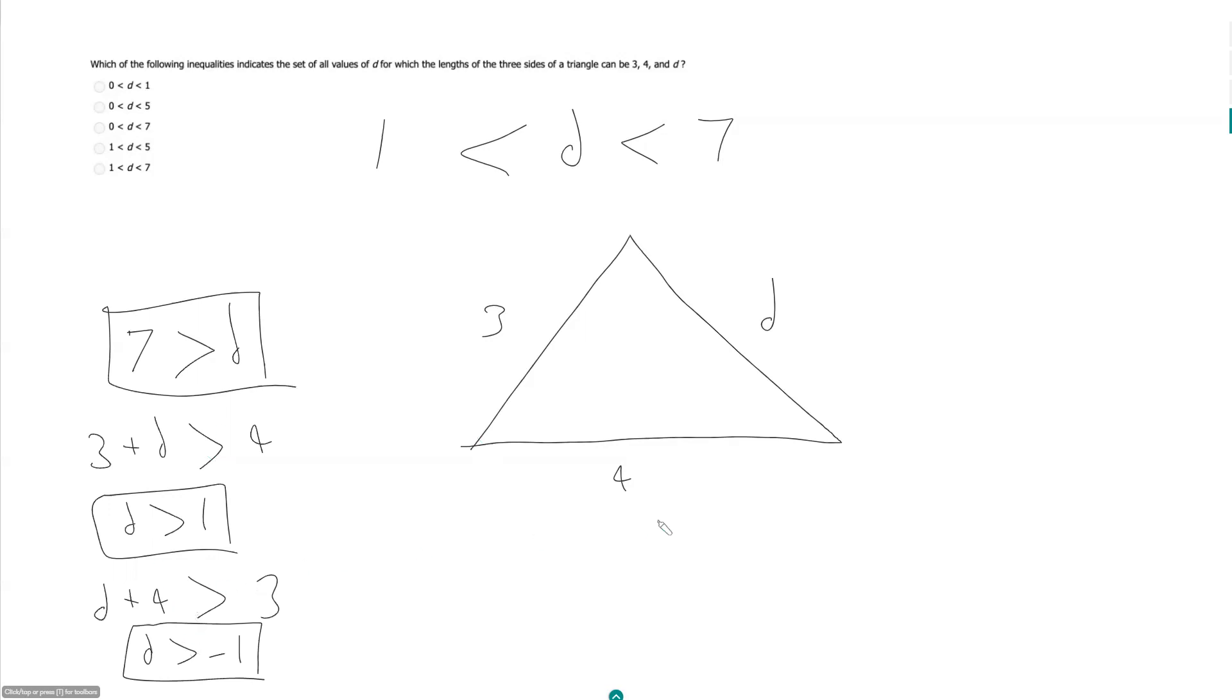So let's think about what this means. So now if we say D has got to be greater than 1 and it's got to be greater than negative 1. Well if D is greater than 1 and greater than negative 1, that's really just the same as saying D has got to be greater than 1. And here D has got to be less than 7. And that's how we get to E.